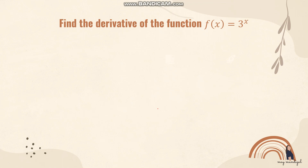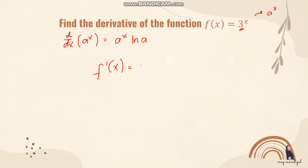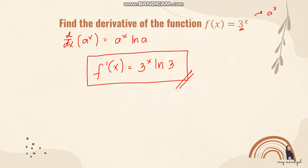Let's try an example. Find the derivative of f(x) = 3 raised to x. This follows the form a raised to x, so the derivative of a raised to x is a raised to x times ln of a. Here, a is the base, which is 3. Therefore, the derivative is 3 raised to x times ln of 3. You just have to identify the form it follows and then apply the formula.